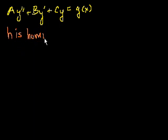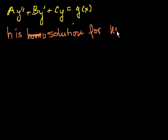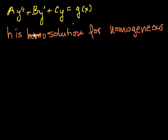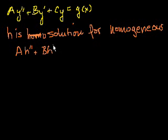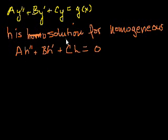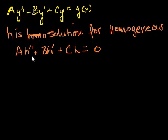h is for homogeneous. That means that a times the second derivative of h plus b times h prime plus c times h is equal to 0 — that's what it means for h to be a solution. Let's say h is the general solution for the homogeneous equation. We know how to solve that: take the characteristic equation, depending on how many roots it has and whether they're real or complex, you can figure out a general solution. And if you have initial conditions, you can substitute them and get the values of the constants.